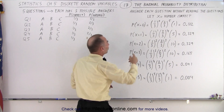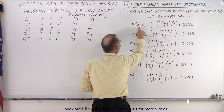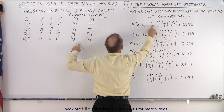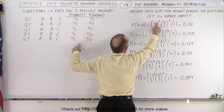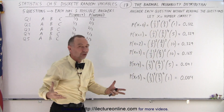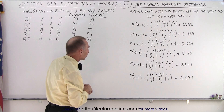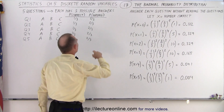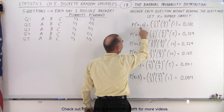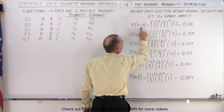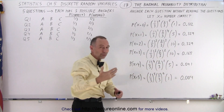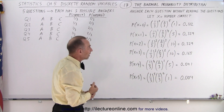So in this case, since we're looking for the probability that zero are correct, we take the probability that any one of the answers is correct and raise it to the zero power, because there are no cases where any one of them is correct. Notice that the probability of getting one wrong is two-thirds, and since we're expecting all five of them to be incorrect, we take two-thirds raised to the fifth power — that's two-thirds multiplied by itself five times.